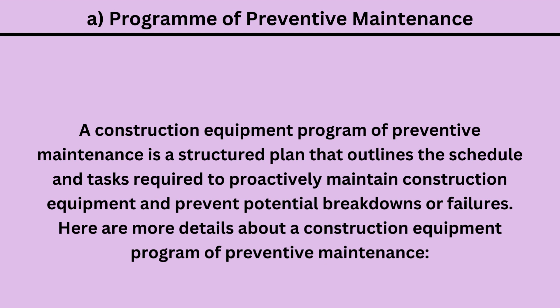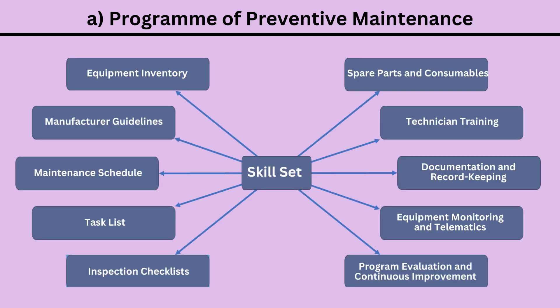Here are more details about a construction equipment program of preventive maintenance: 1. Equipment inventory. 2. Manufacturer guidelines. 3. Maintenance schedule. 4. Task list. 5. Inspection checklists. 6. Spare parts and consumables. 7. Technician training. 8. Documentation and record keeping. 9. Equipment monitoring and telematics. 10. Program evaluation and continuous improvement.